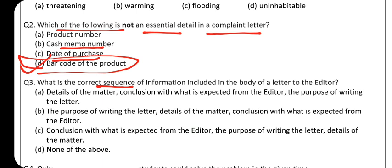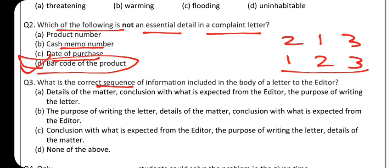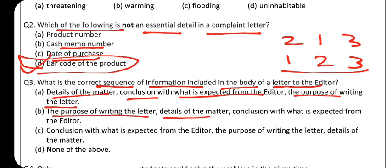Question 3: Which is the correct sequence — pattern — for the body of a letter to the editor? First: the purpose of writing the letter. Second: details of the matter. Third: conclusion — with what is expected from the editor, so that our problem is solved. Option B is correct — that is the correct sequence for the body of a letter to the editor.